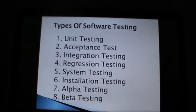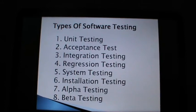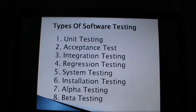Unit testing is the first level of dynamic testing and is first the responsibility of the developer and then of the tester. Unit testing is performed after the expected test results are met or differences are acceptable.